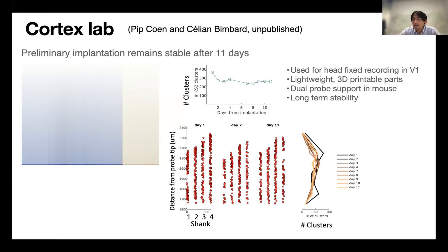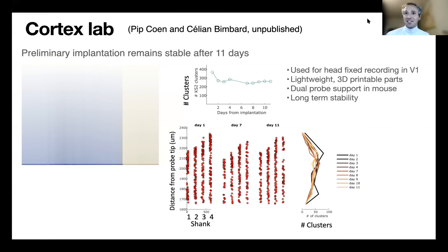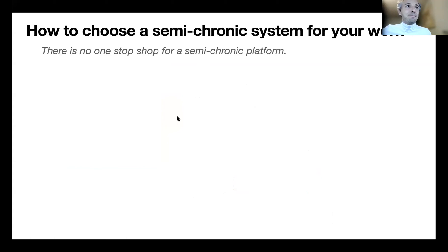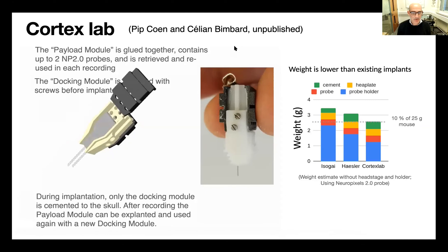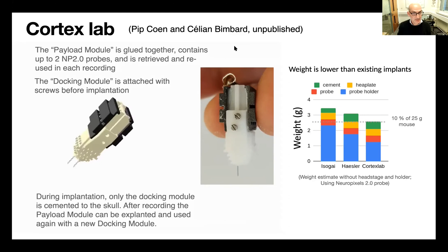We're joined by Pip and Cillian, who developed this design. Pip noted that the mouse recordings are now at day 22 and still appear stable — so the data, while very preliminary, is encouraging. They also clarified that the 10% body weight figure is a rule they follow in their lab, though different labs may have different guidelines.